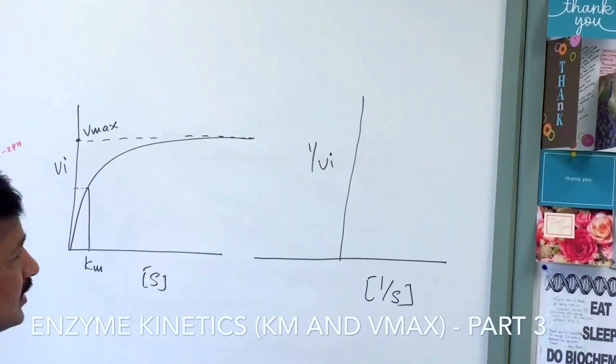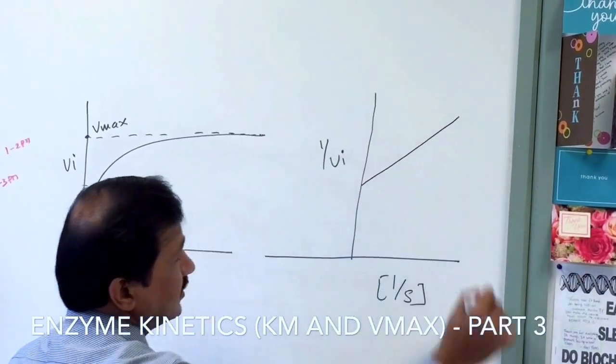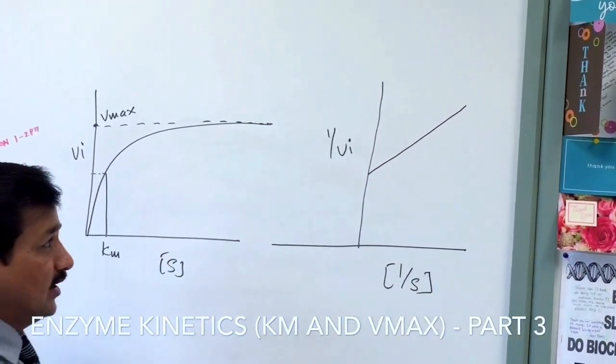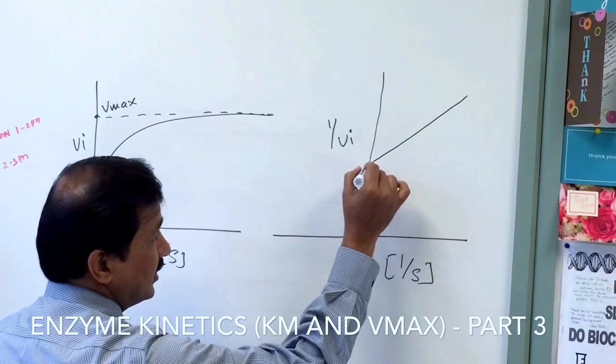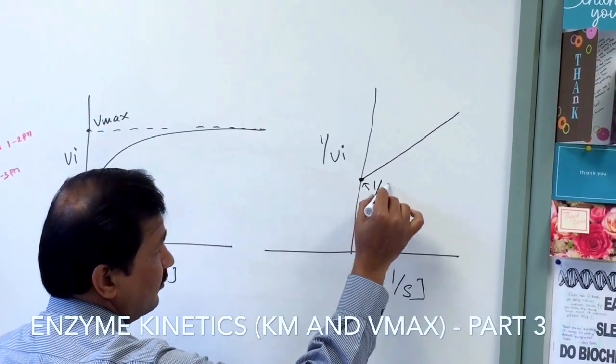The line goes like this, a straight line indicating the velocity of the reaction. It meets somewhere on the y-axis and that particular point we call 1 over Vmax. This point is 1 over Vmax.